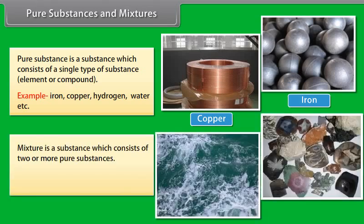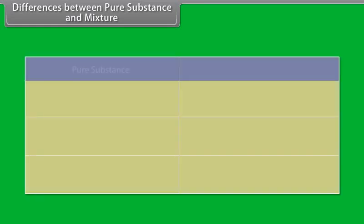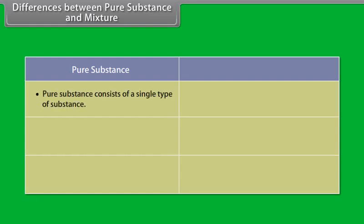A mixture is a substance which consists of two or more pure substances. For example, seawater, minerals, soil, etc.